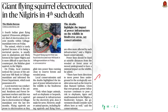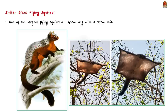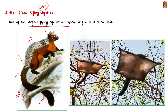Let us see some important points about the Indian giant flying squirrel. It is one of the largest flying squirrels, about 43 cm long with a 50 cm long tail. Actually, the term 'flying' here is a misnomer — these squirrels cannot fly; they can only glide in the air. They glide using a membrane that extends from their wrist to their ankles, allowing them to glide from tree to tree.